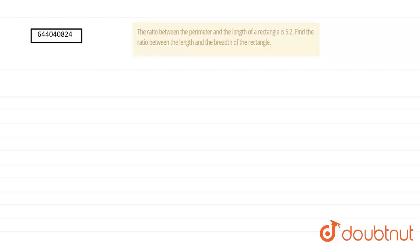We have a question of area and perimeter which says that the ratio between perimeter and the length of a rectangle is 5:2. We have to find the ratio between length and breadth of the rectangle.